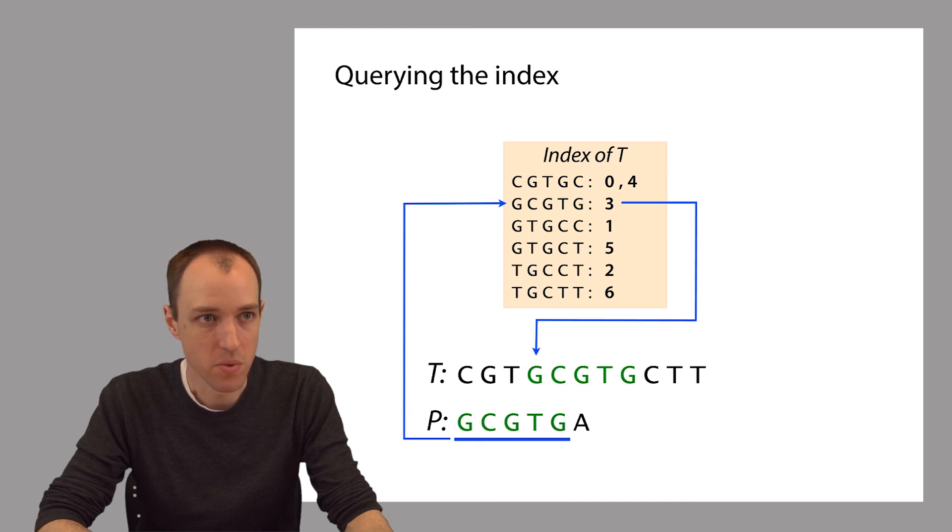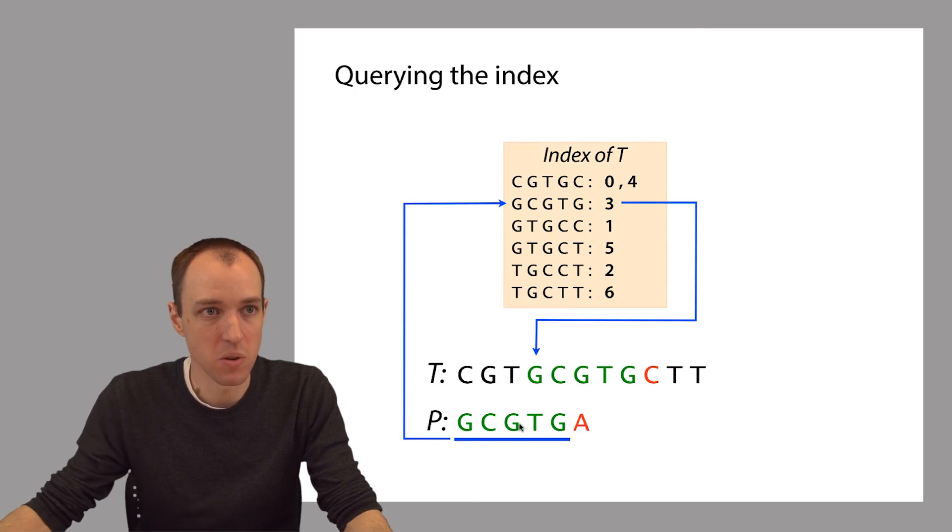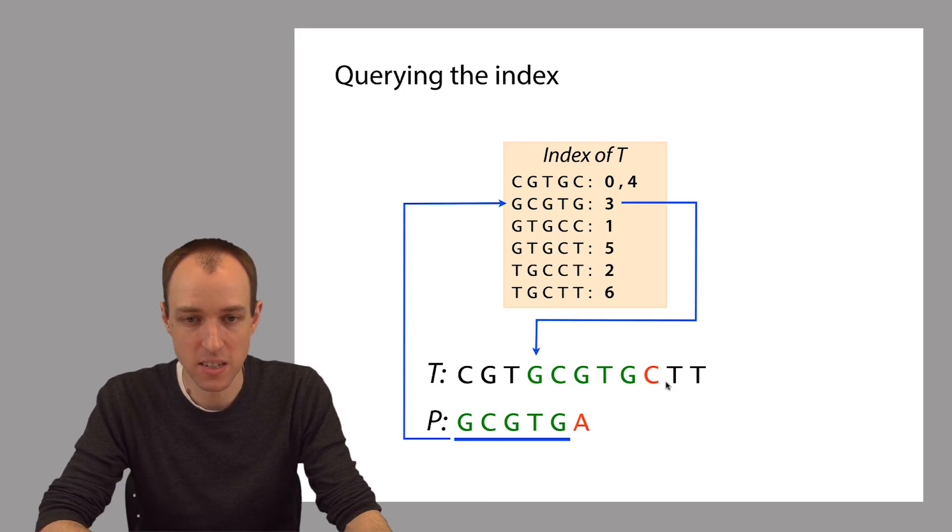Let's take the first 5-mer and query the index. We see that that 5-mer hits at offset 3, right here. But then when we go to verify, we do this character comparison. We compare this A to this C, and we find that P does not match T. That's good. That's the correct answer. P does not match T in this case.